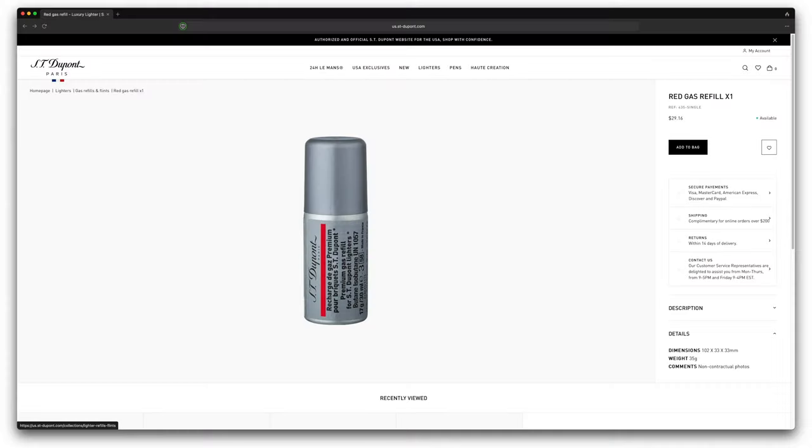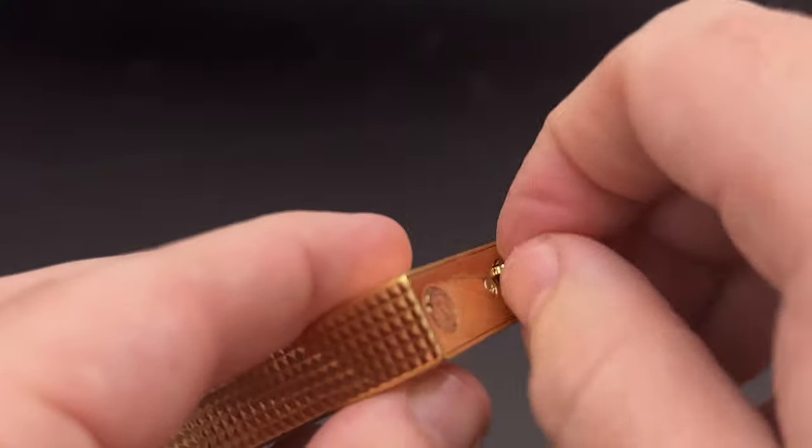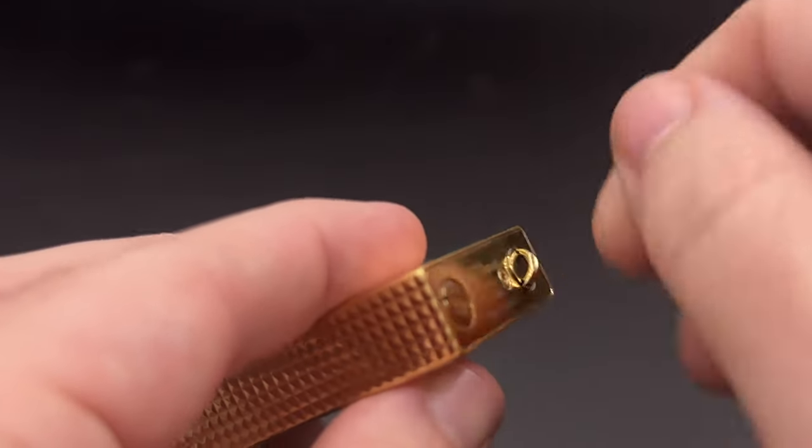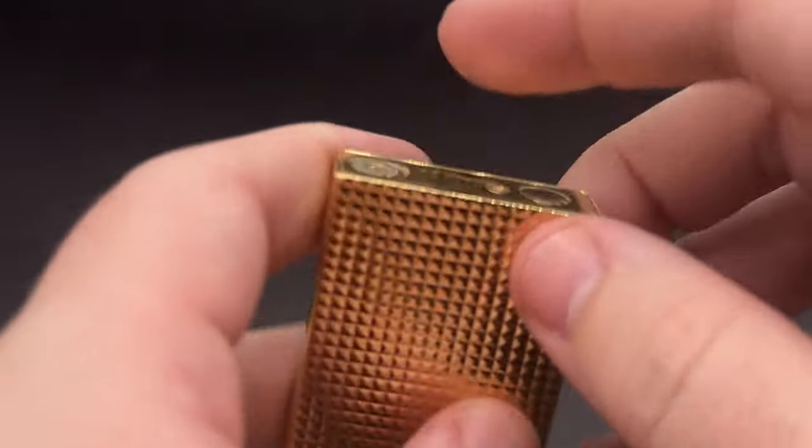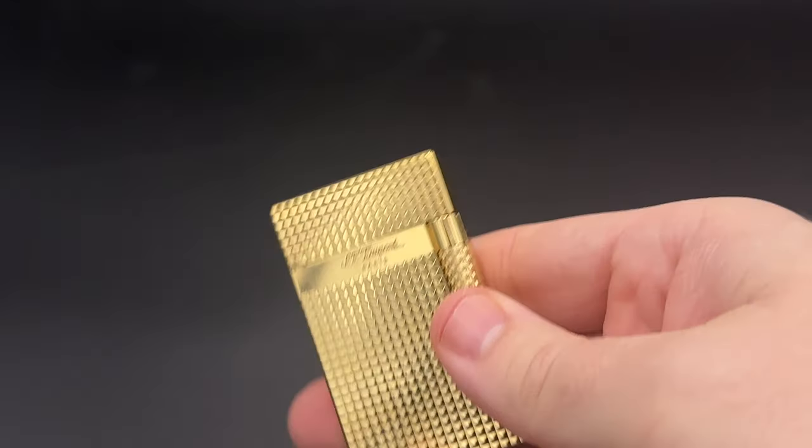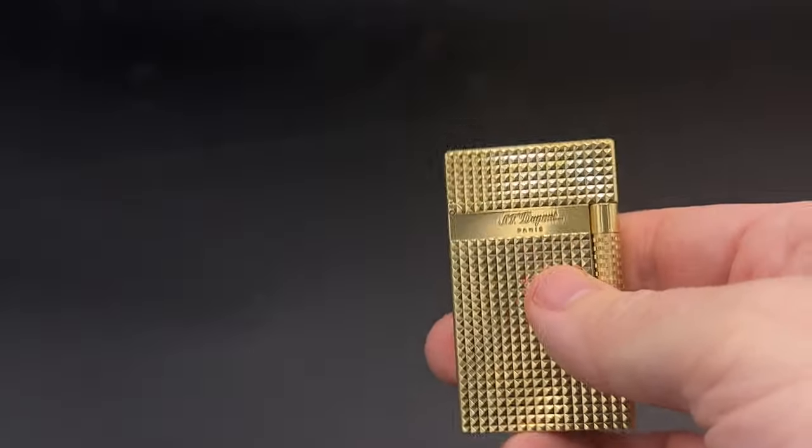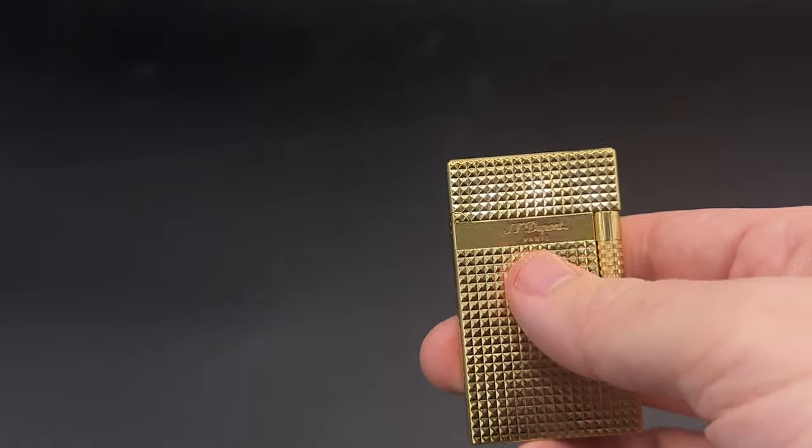One note on the butane, it is expensive, it's about $20, that's just under $30 a can for about 30 milliliters, which is a super high premium if you want to use the official ST DuPont butane. I'm not going to say that you can't use other butanes with this, but I will tell you that ST DuPont requests that you use their butane.